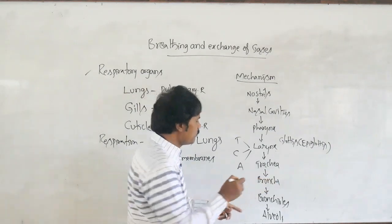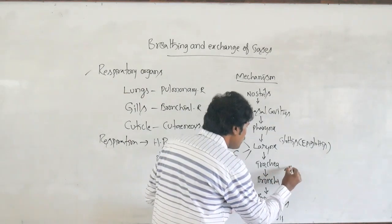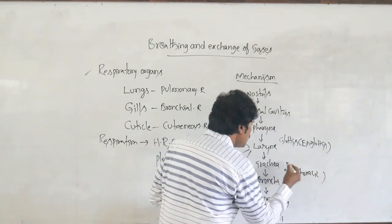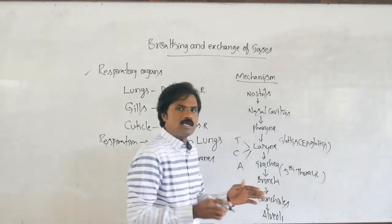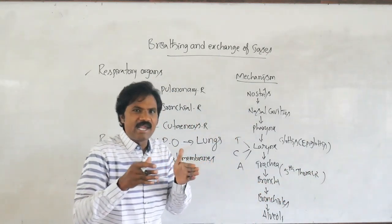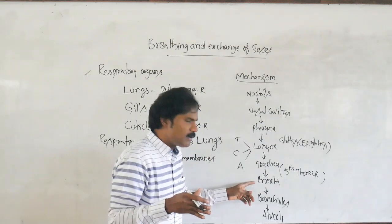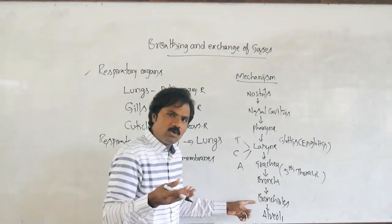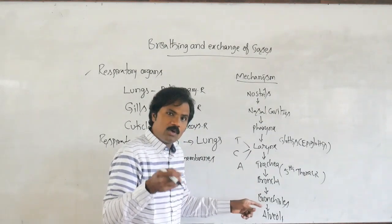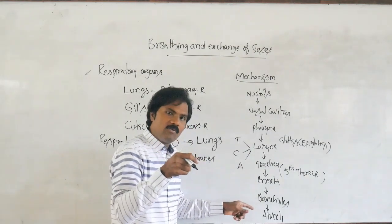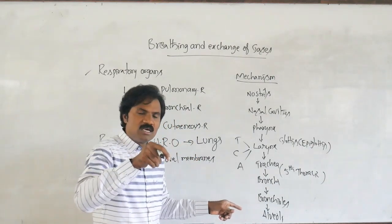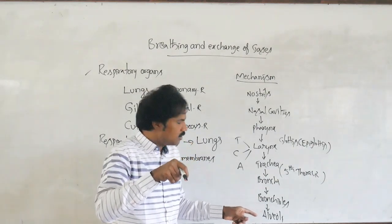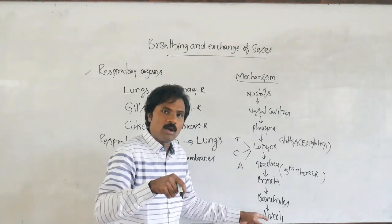Then comes the trachea, which is also called the windpipe. It is half-moon shaped and protected by C-shaped cartilaginous rings. On the fifth thoracic vertebra, it is segregated into right and left bronchi. The bronchi divide into primary, secondary, and tertiary bronchi, and then terminate with bronchioles.